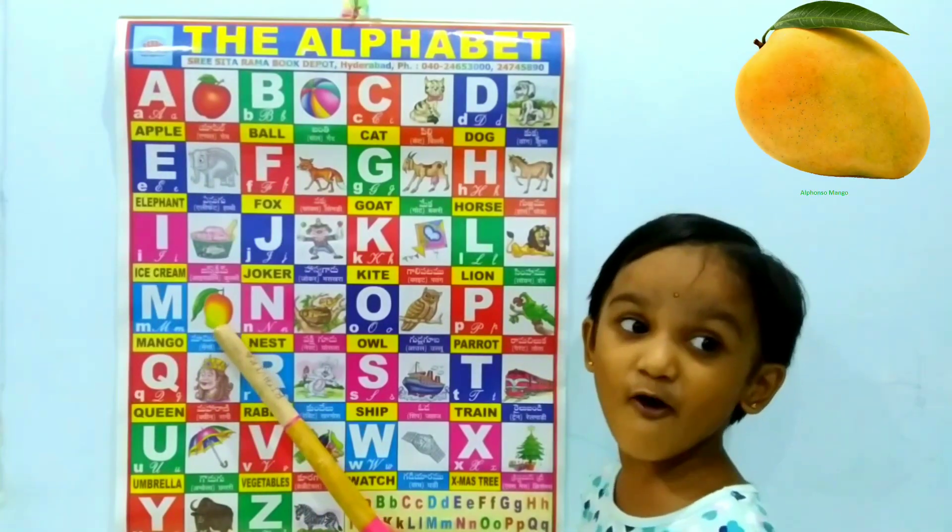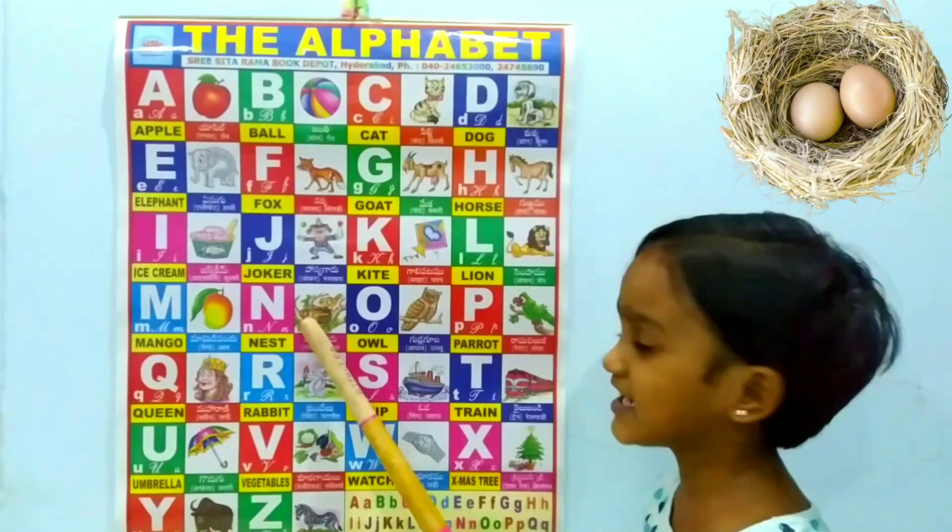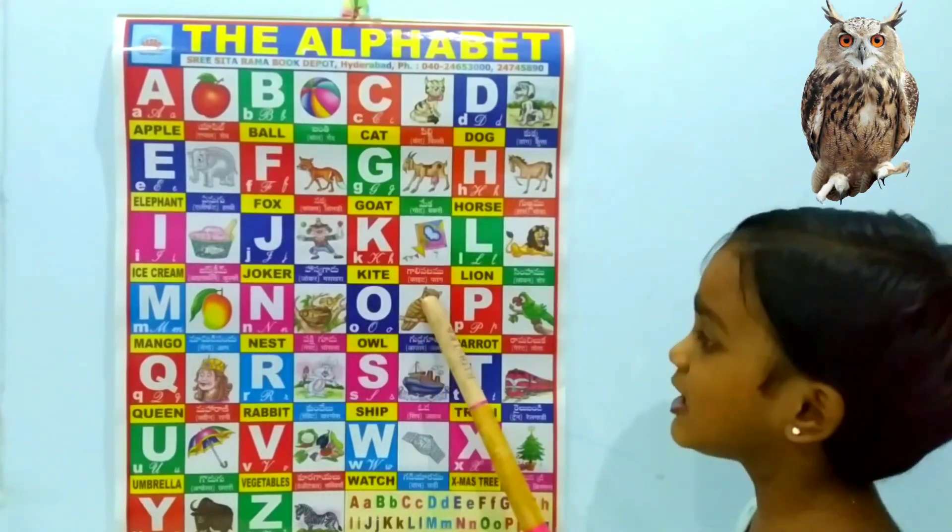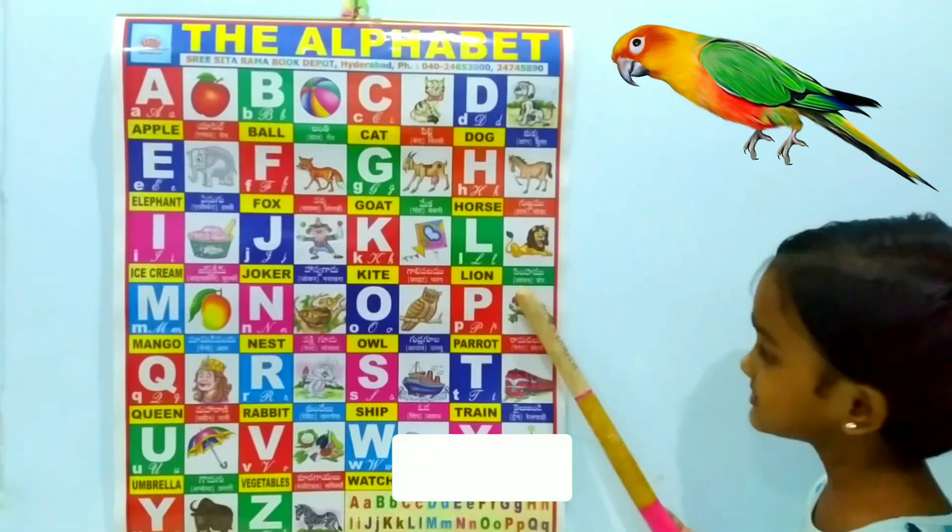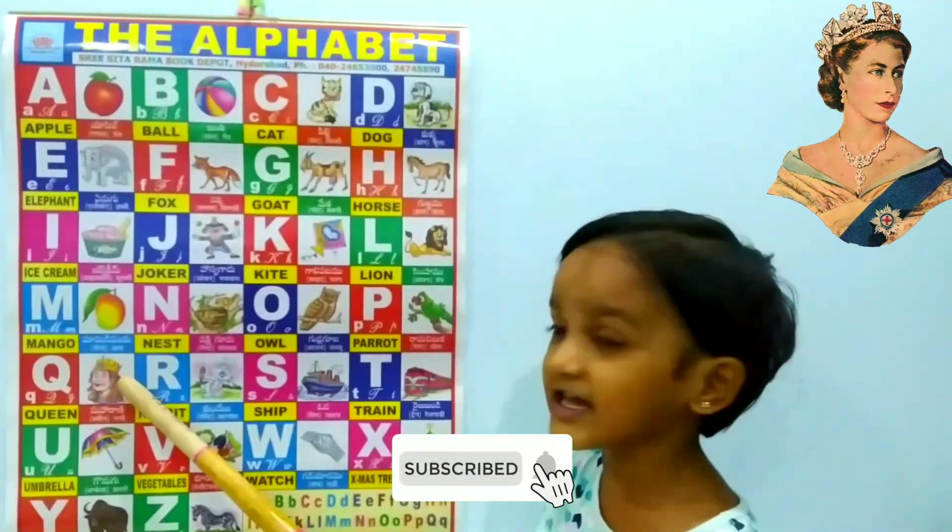M for Mango, N for Nest, O for Owl, B for Parrot, Q for Queen